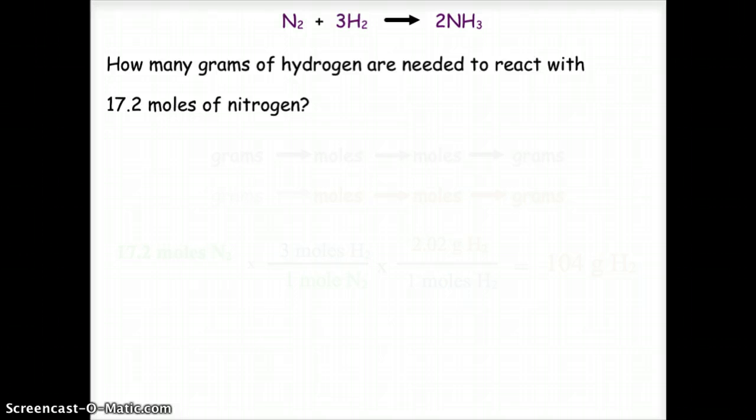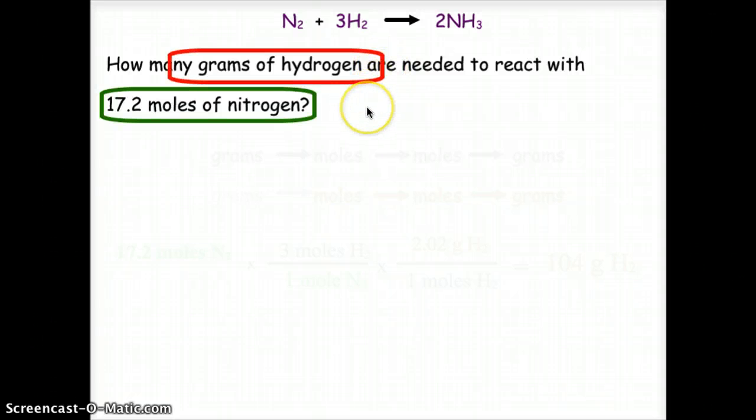How many grams of hydrogen are needed to react with 17.2 moles of nitrogen? Well, this 17.2 moles of nitrogen is actually our starting point. We're going to highlight that in green and we understand that we're going to start at moles. And our question is actually how many grams of hydrogen? So we're going to highlight that in red knowing that's where we're going to end.